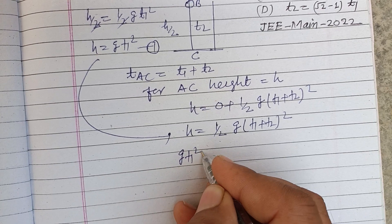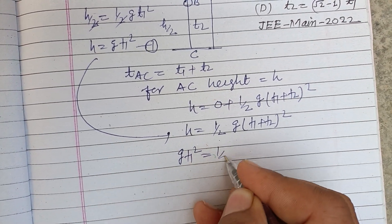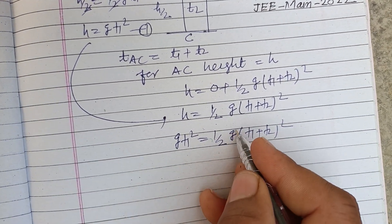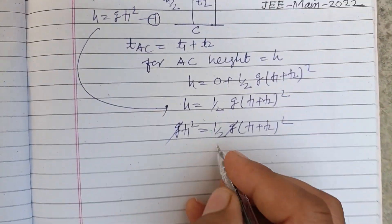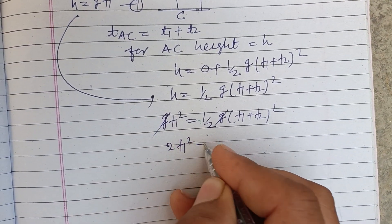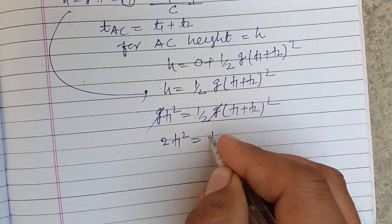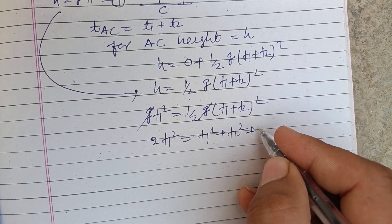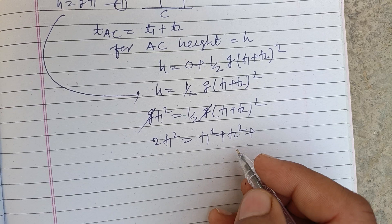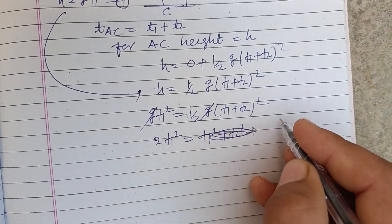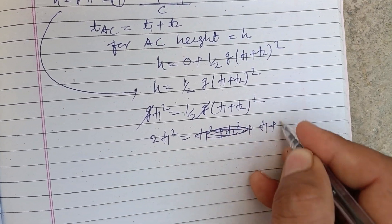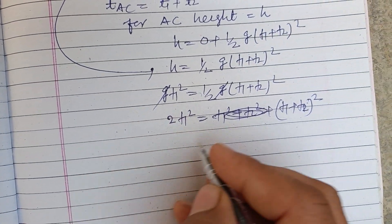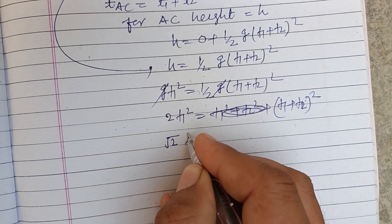Substituting h = g·t1² into the second equation: g·t1² = ½g·(t1 + t2)². The g cancels, giving 2·t1² = (t1 + t2)², which expands to 2·t1² = t1² + 2·t1·t2 + t2².